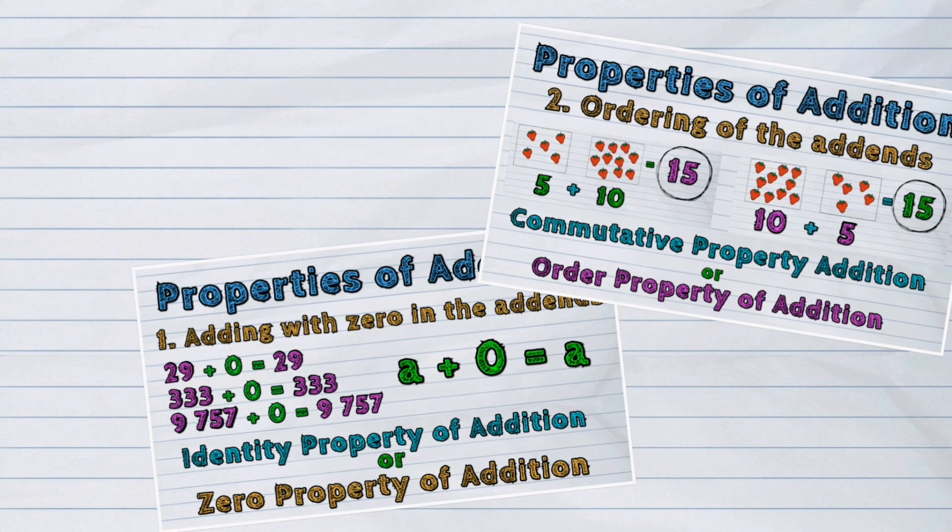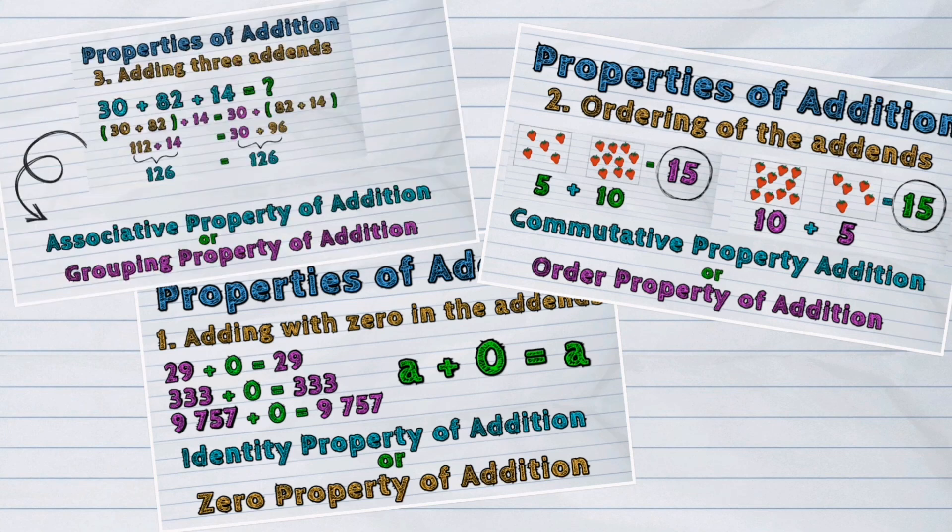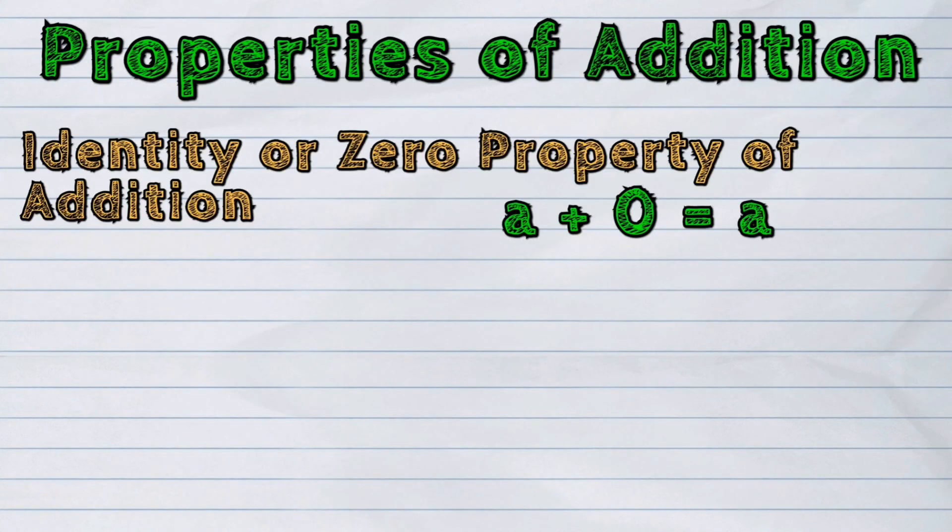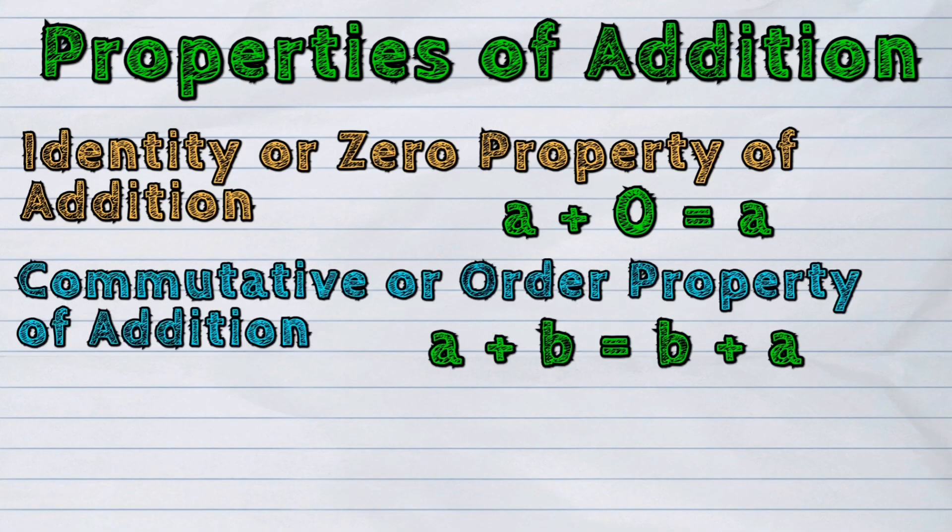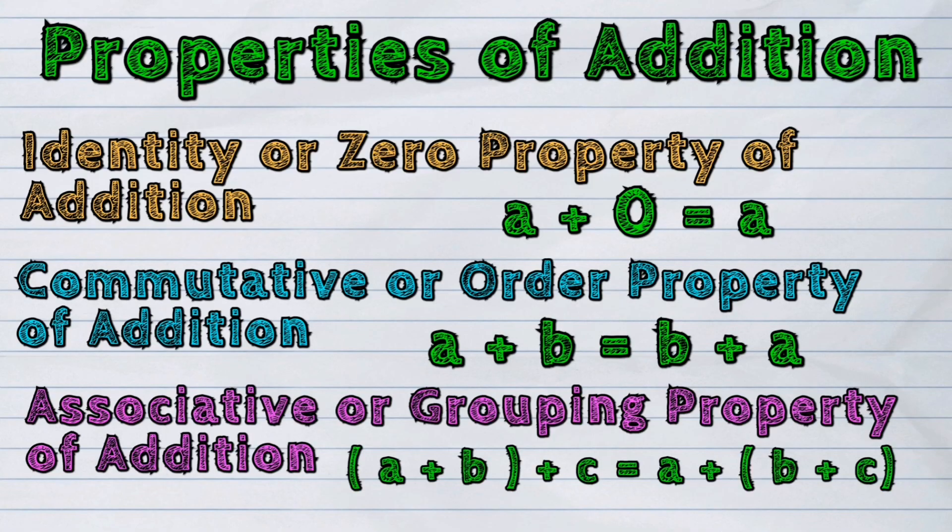And those are the three properties of addition: the identity or zero property, the commutative or order property, and the associative or grouping property of addition.